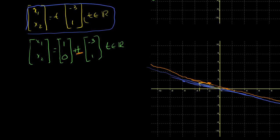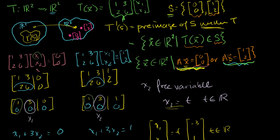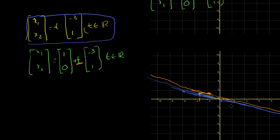What we wanted to find out is: what were all of the vectors in our domain that, when we apply the transformation, map to vectors within our subset of our codomain — mapping to either (0, 0) or the vector (1, 2)? All the vectors on the blue line map to (0, 0), and all the ones in orange, when you apply the transformation, map to the point (1, 2).